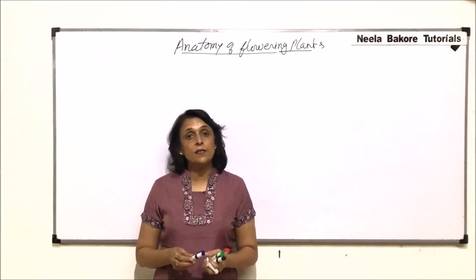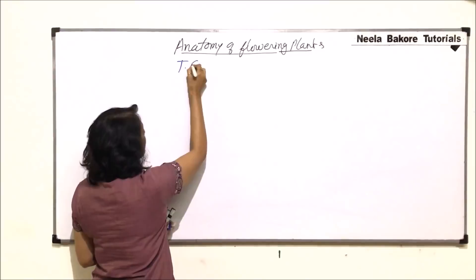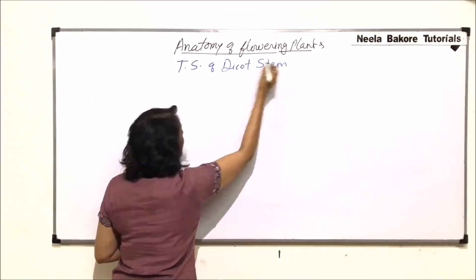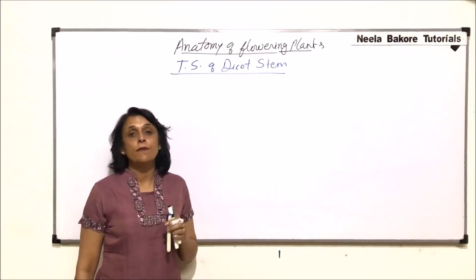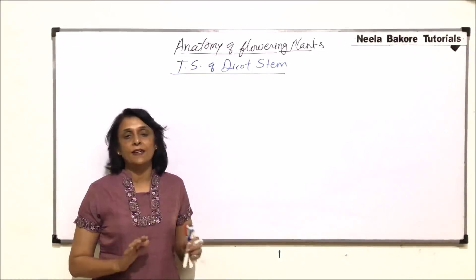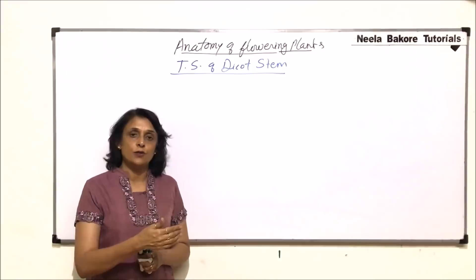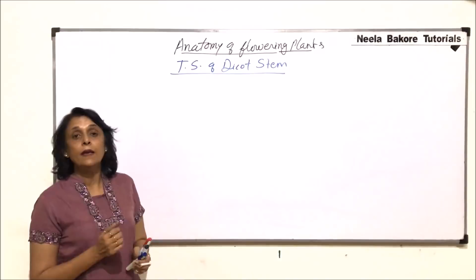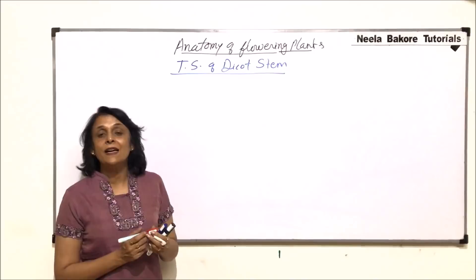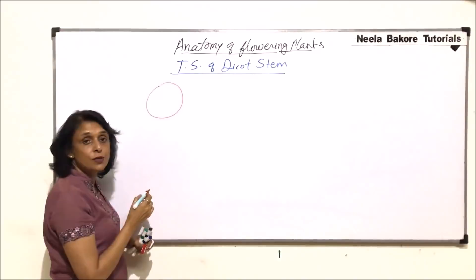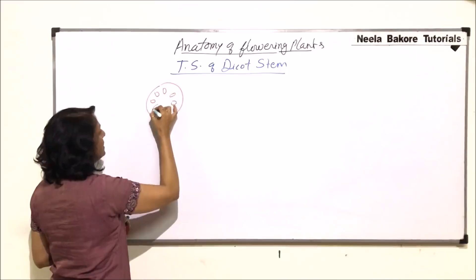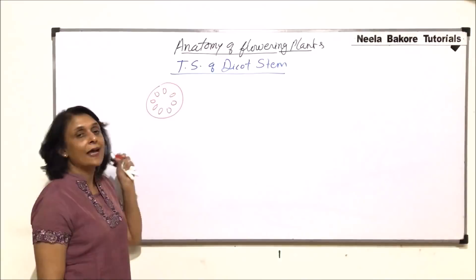In this video we will look at the internal structure of the stem. The first section is a transverse section of dicot stem. We start with dicot stem because this is one stem where we can see all the stages of secondary growth very nicely. After understanding its primary structure, we'll discuss secondary growth, then monocot stem, root structure, and secondary growth. In dicot stem, many vascular bundles are arranged in a ring — this ring-like arrangement is a characteristic feature.